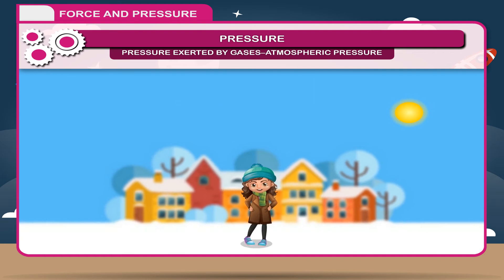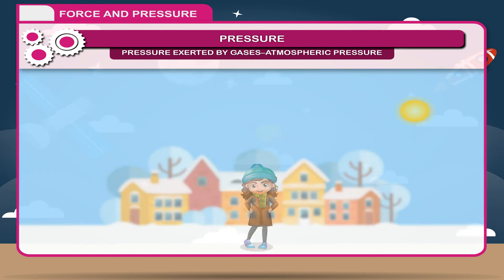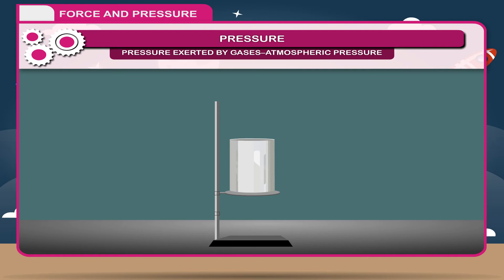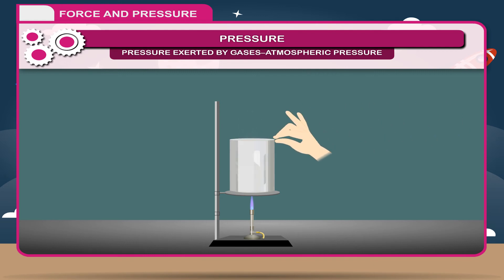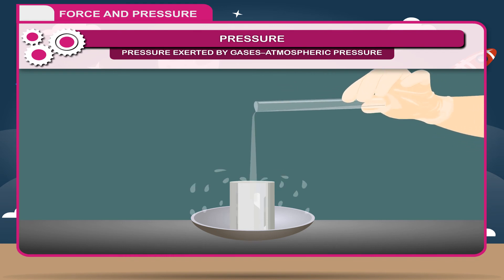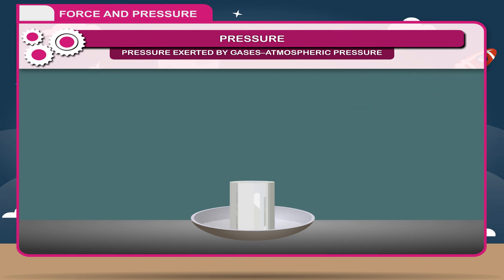To prove that air exerts pressure, let us perform an activity. Activity 1: Take an empty tin can. Put some water in it and heat the can until the water boils. When the entire water boils and some steam has escaped into the atmosphere, put an airtight cap onto the tin. Now pour some cold water onto it. The remaining steam will condense into water and a partial vacuum will be created inside the can. Due to high atmospheric pressure outside, the can will crush. This shows that air exerts pressure.